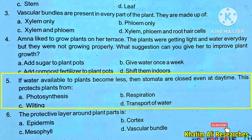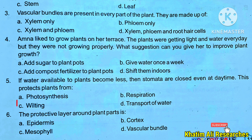The correct option is C — Wilting. When water is scarce, the stomata close and the plant wilts.